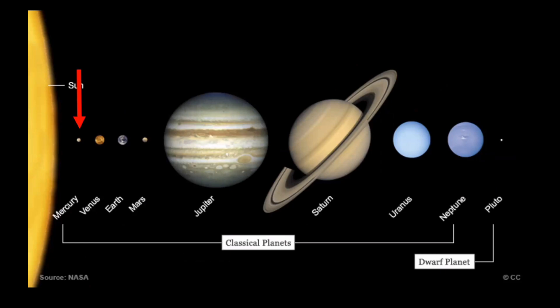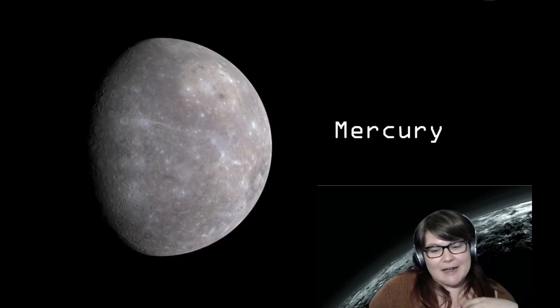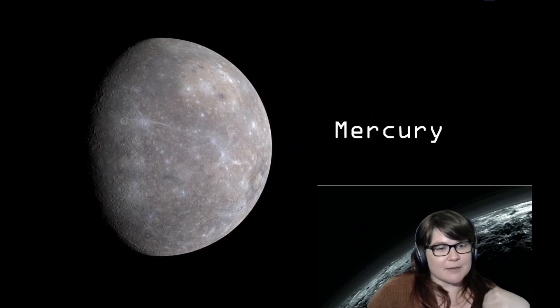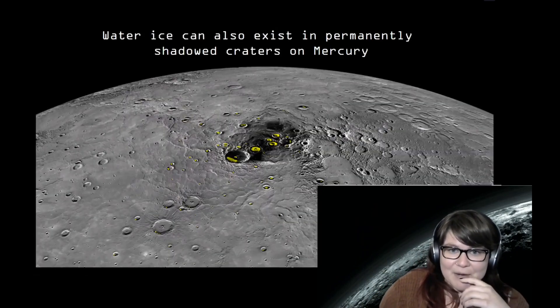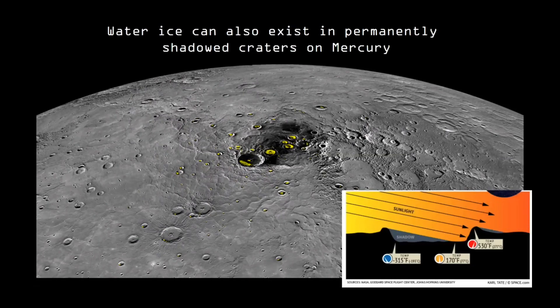Zooming back out, we're going to a planet I originally thought would be the least likely to have ice — and that's Mercury, the planet closest to the sun. Mercury isn't actually the hottest planet; that prize goes to Venus. But we also see that water ice can exist in a similar manner to the Moon, in permanently shadowed craters at the poles of Mercury that never see the sun. Yellow craters marked locations that showed evidence for water ice detected by Earth-based radar observations, and later the Messenger spacecraft was able to actually image these.